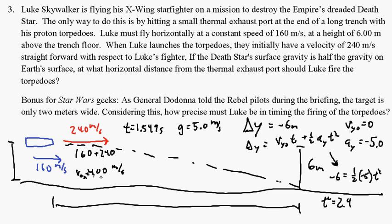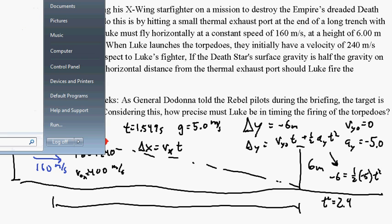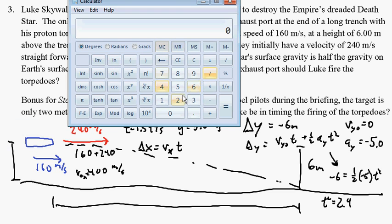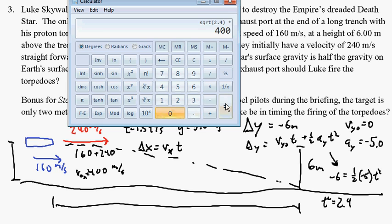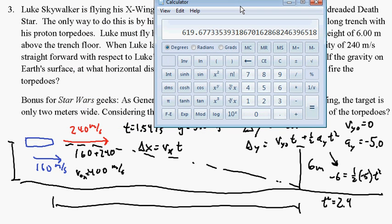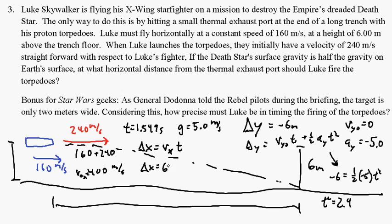These guys travel at a constant velocity in the X direction, so how far they travel in the X direction is their X velocity times the time. That ends up being 1.549 times 400, and that gets us the answer, which is 620-ish meters. So I'm just going to round it to 620. Luke has to launch the torpedo when he is 620 meters away.